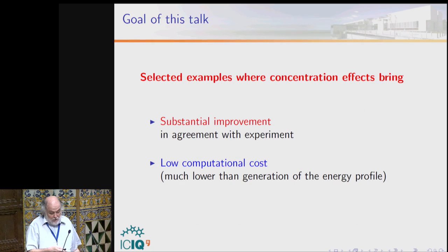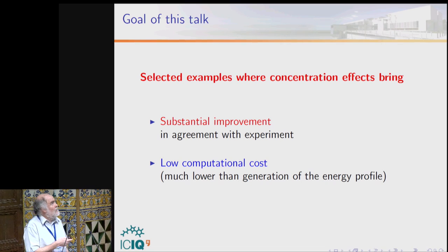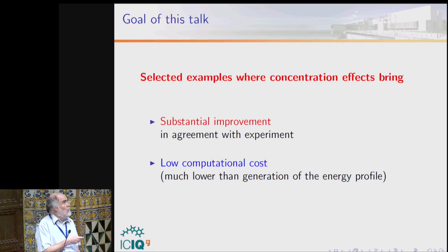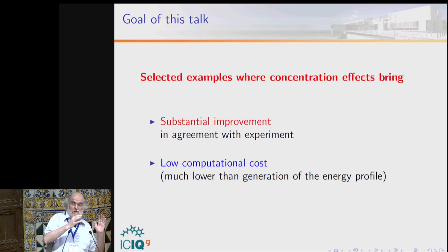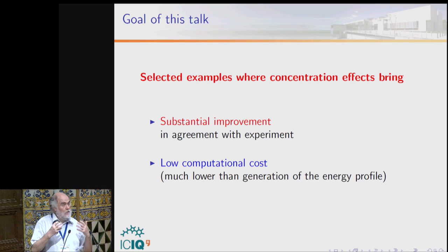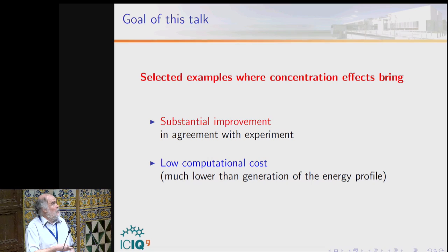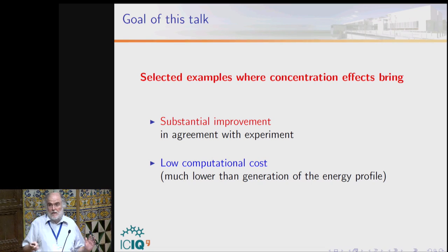These programs have been developed for enzymatic catalysis by experimental biochemists, but they are freely accessible and can be used. The advantage is that these are just numerical calculations — simple arithmetic operations. This is much cheaper than doing the free energy profile. What I want to show today is selected examples where concentration effects bring a substantial improvement in agreement with experiment — starting from the free energy profile, doing a microkinetic treatment, and getting a much better result at very low computational cost.